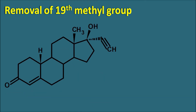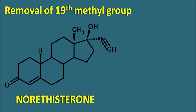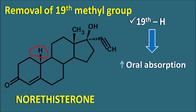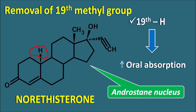Similarly, removal of the 19th methyl group — the angular methyl group at the 19th position — gives norethisterone. The prefix 'nor' indicates that a methyl group is removed; at the 19th position, hydrogen is now present instead of the methyl group. Removal of the 19th methyl group results in increased oral absorption, so norethisterone has even greater oral absorption compared with ethisterone. Just like ethisterone, norethisterone has the androstane nucleus and is a derivative of testosterone with progesterone activity.